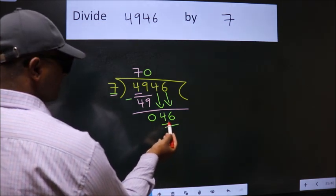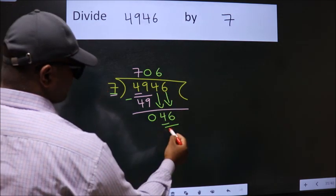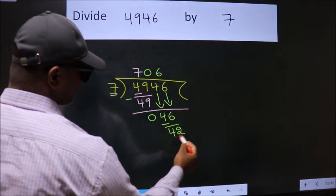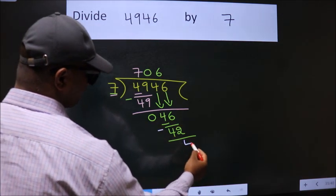A number close to 46 in the 7 table is 7 times 6 equals 42. Now we subtract. We get 4.